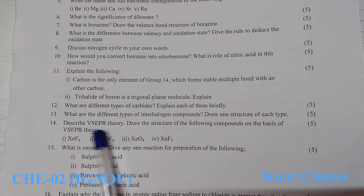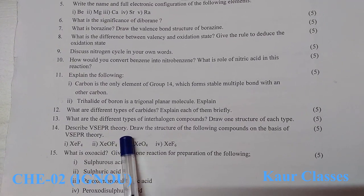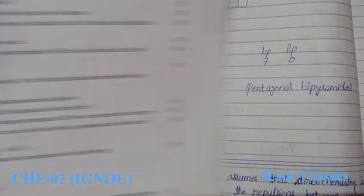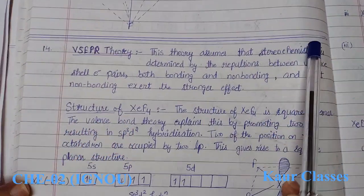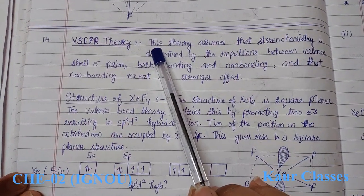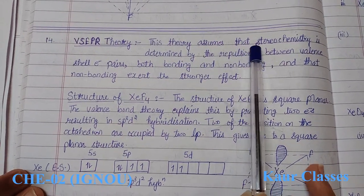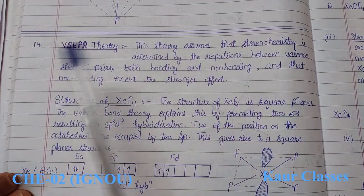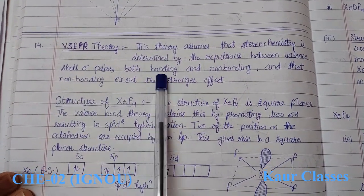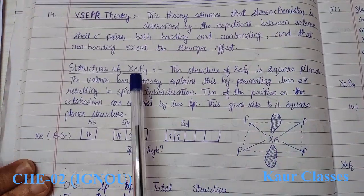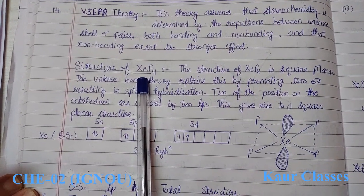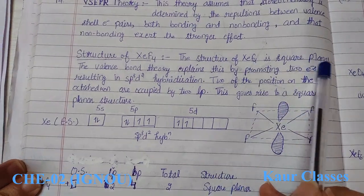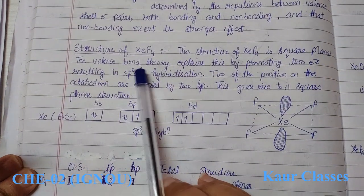Next, we describe VSEPR theory and apply it to four xenon compounds. VSEPR theory assumes that the stereochemistry of a molecule is determined by repulsion between valence shell electron pairs, both bonding and non-bonding. The first structure is xenon tetrafluoride (XeF4), which is square planar since it has four bond pairs.